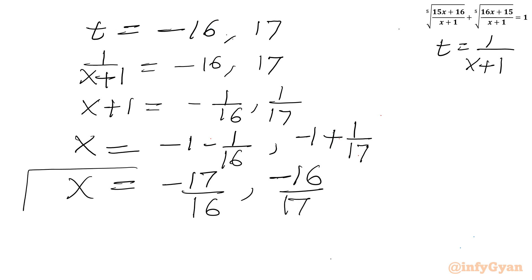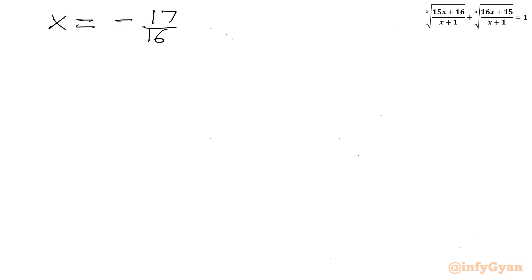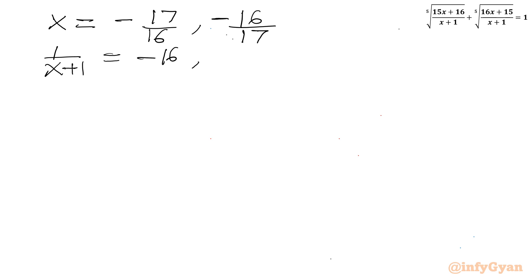So the two candidate solutions are x = −17/16 and x = −16/17. We now cross-examine whether these are valid. For x = −17/16, we have 1/(x+1) = −16; for x = −16/17, we have 1/(x+1) = 17.